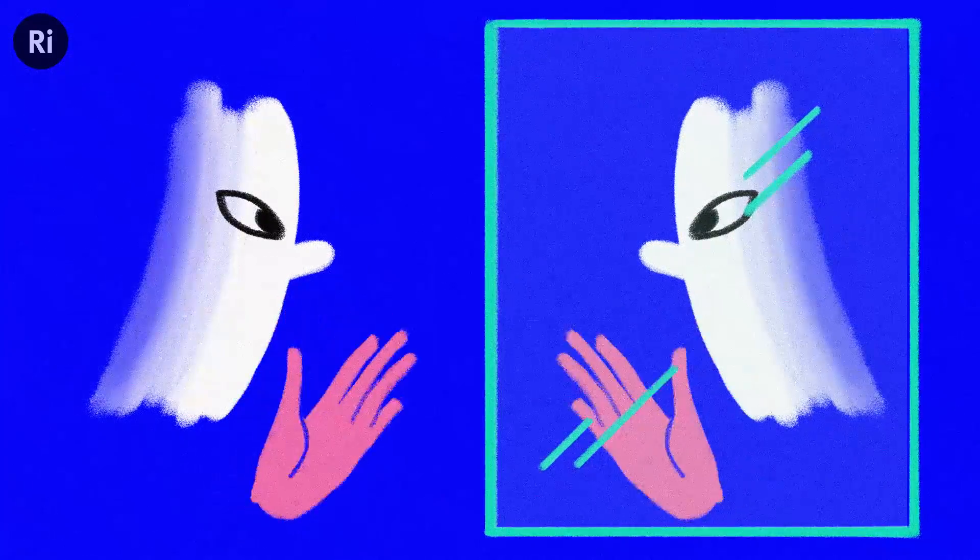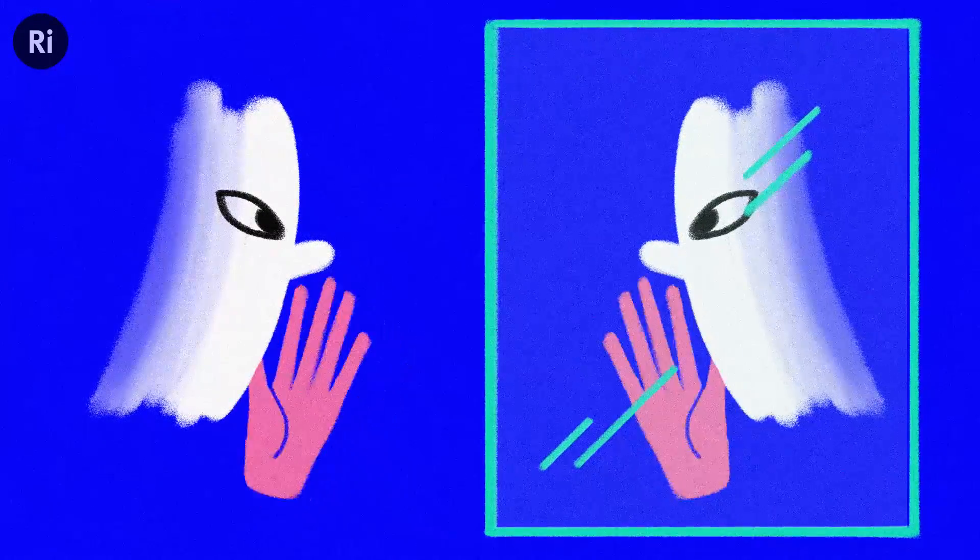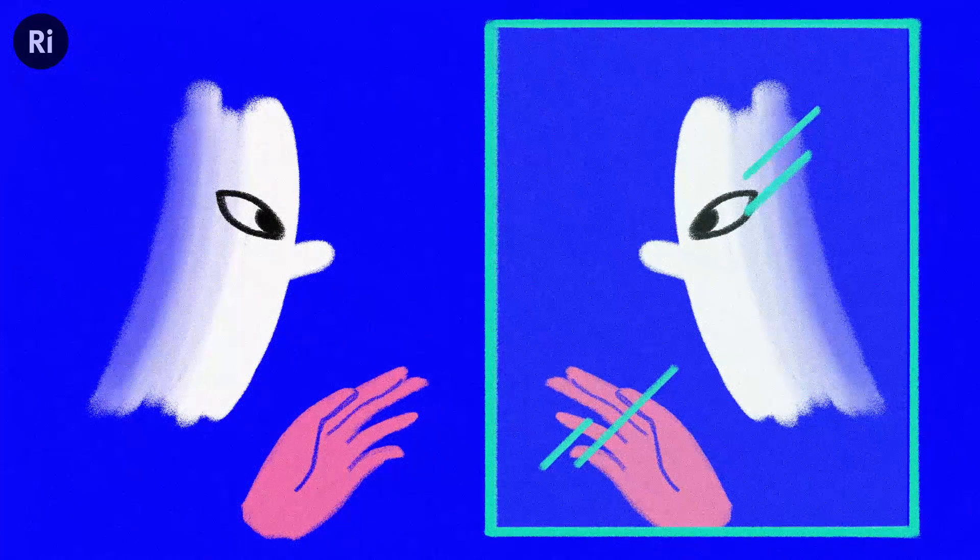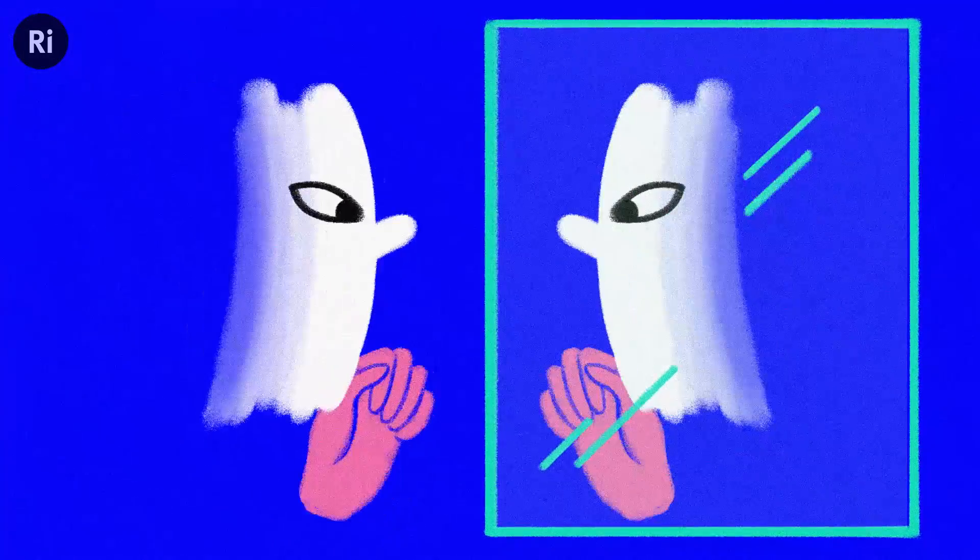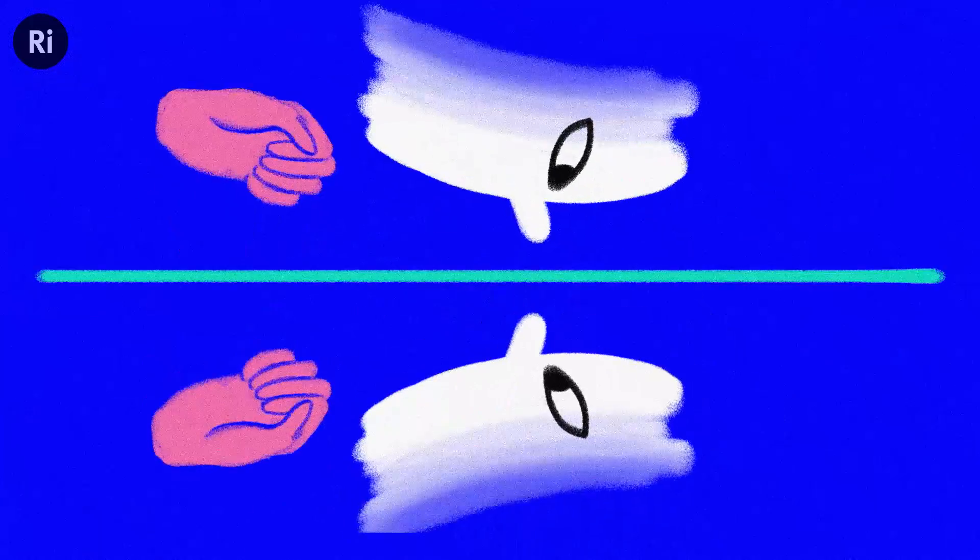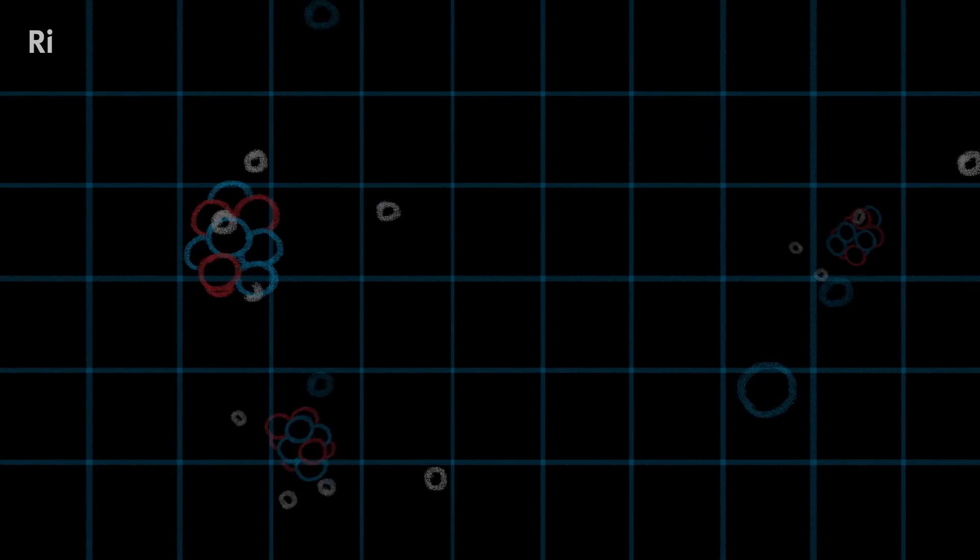Look into a mirror, wave your hand and your reflection will wave back at you. In everyday life it's easy to take the effect of symmetry for granted, but symmetry is vital to understanding and predicting how our universe works.